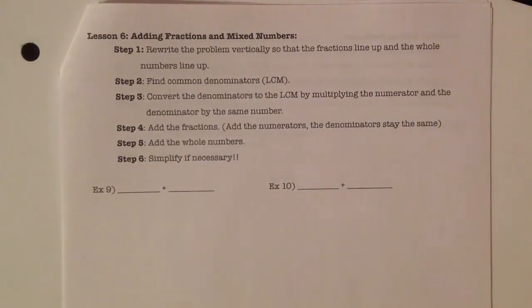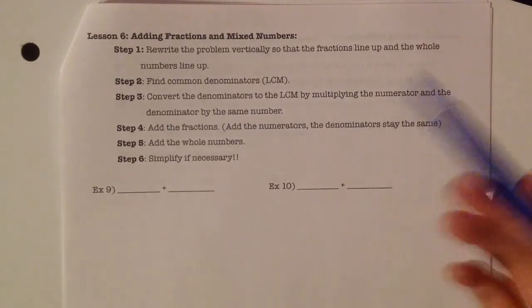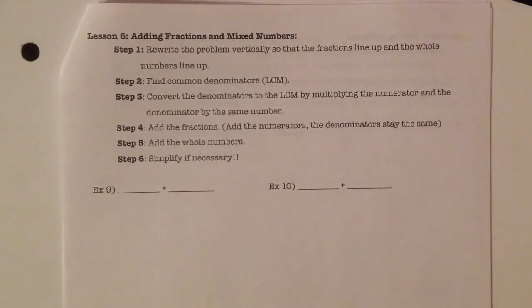Lesson 6 is about adding fractions and mixed numbers. When we get to adding and subtracting with fractions, that's a little bit different than multiplying and dividing. Going through the steps, the first thing I recommend doing is to rewrite the problem vertically so that our fractions line up and our whole numbers line up. It's a good way, especially when we get to subtraction, that helps keep things in order so that you don't make a mistake.